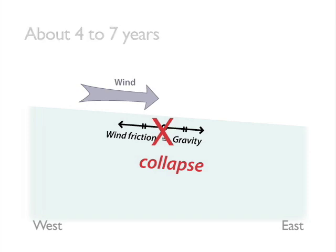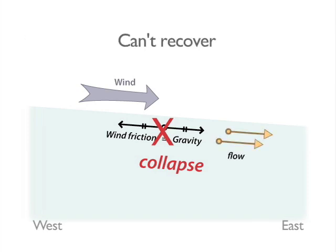About every four to seven years, eastward winds collapse the wind-gravity balance and the balance cannot recover. This marks the beginning of an El Niño event.